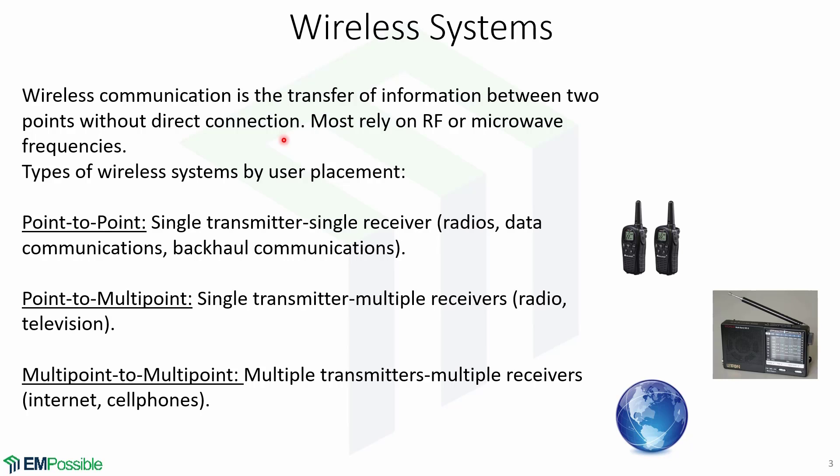Today, wireless systems include broadcast radio and television, cellular telephone and network systems, direct broadcast satellite systems, wireless local area networks, paging systems, GPS or global positioning systems, and radio frequency identification or RFID, among others.